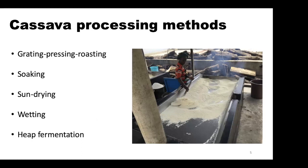The World Health Organization recommendation is 10 ppm, and some countries are recommending even lower. These methods are practiced across sub-Saharan Africa to reduce the cyanide content of cassava before consuming it. You can grate along with pressing and roasting, or you can also soak or sun-dry. Wet or heat fermentation is also used. Any of these processes, if followed strictly, would reduce the cyanide content of cassava.